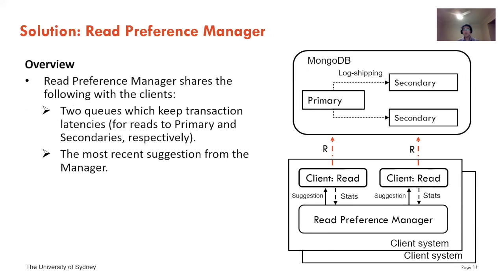Let's now see our approach. Our solution is a component called the Read Preference Manager. The architecture of the Read Preference Manager is shown on the right-hand side. The manager shares two things with the clients: first, two queues which keep transaction latency — one for all reading requests sent to the primary, and one for all reading requests sent to the secondary copies. Second, the Read Preference Manager shares its most recent suggestions with all clients.